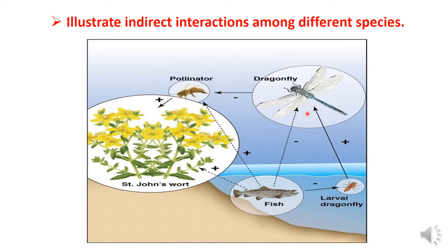If the dragonfly population decreases, the pollinator population increases beyond normal. If pollinators increase, plants get more pollination. This is an indirect relationship — the fish indirectly benefits the plants through controlling the dragonfly population.